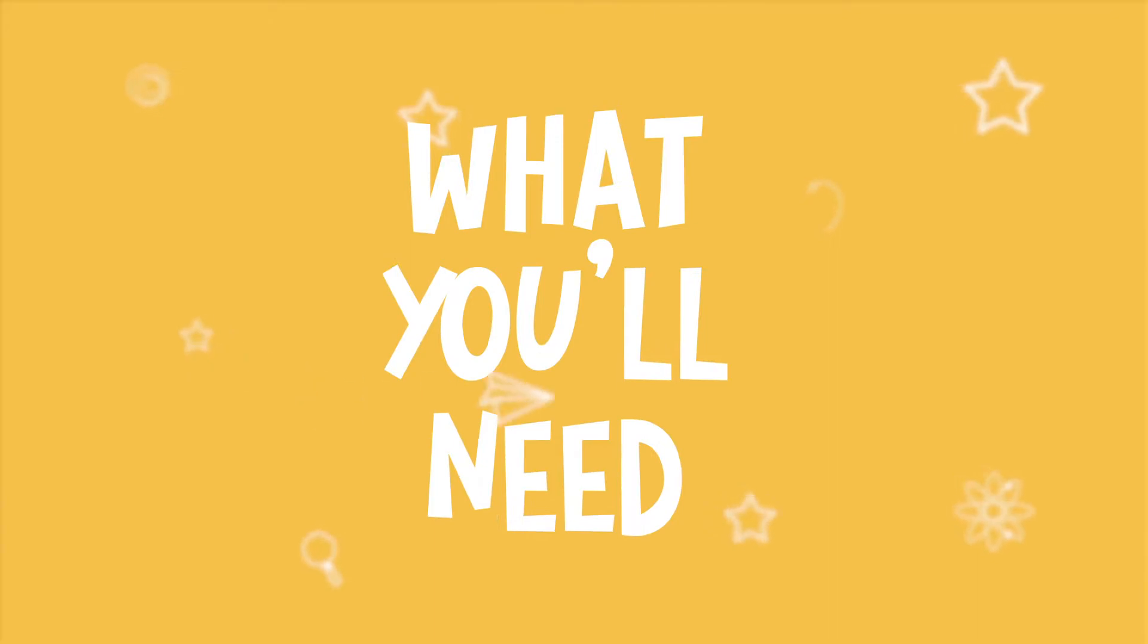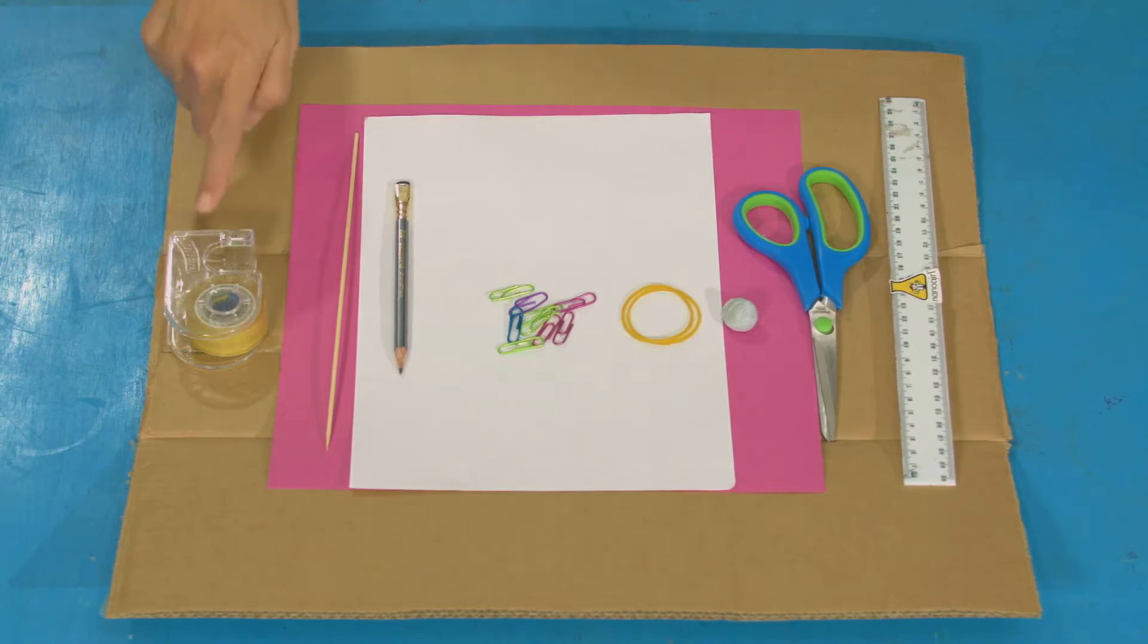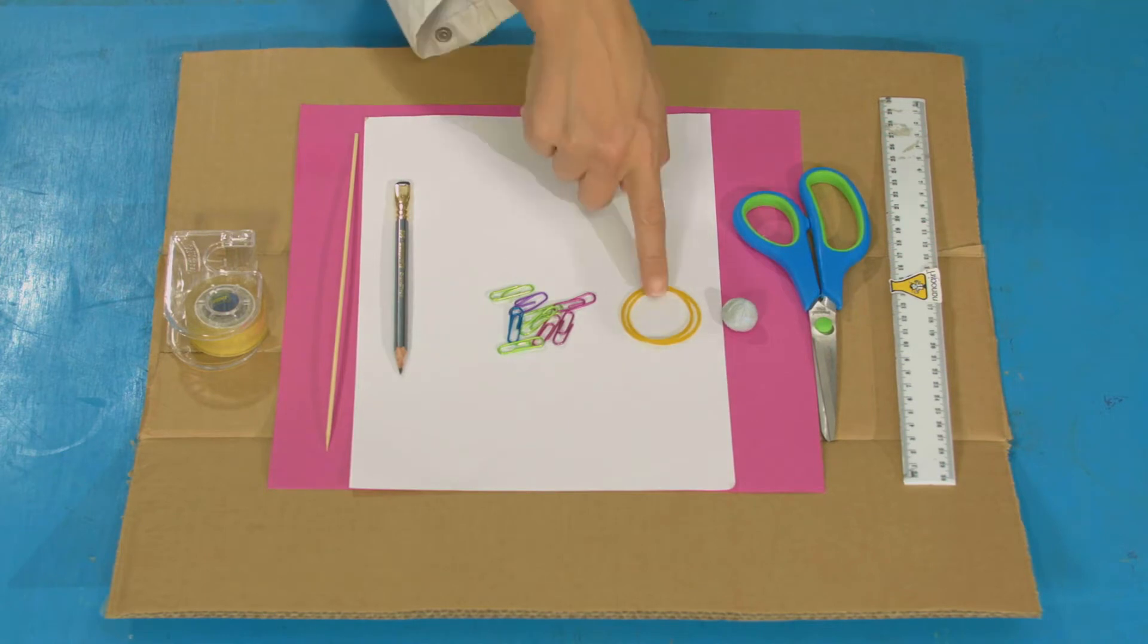For this experiment, you will need some thick cardboard, scissors, pencil, ruler, a wooden skewer, nine paper clips, tape, two sheets of paper, two elastic bands, and some Bluetack.